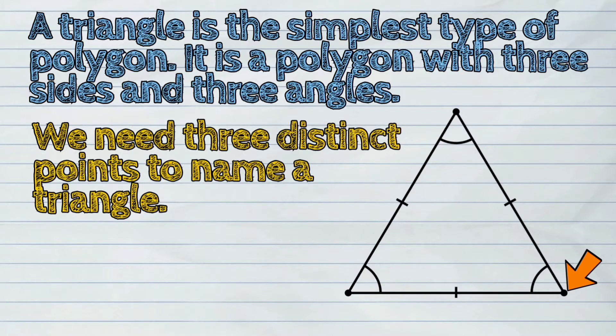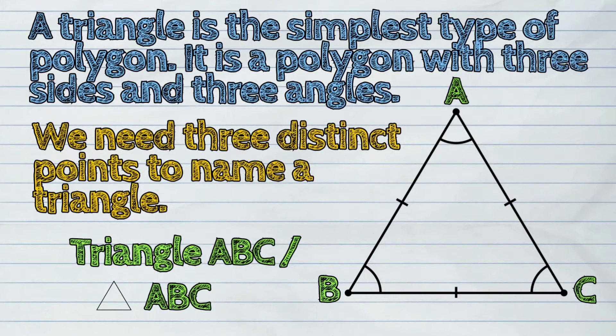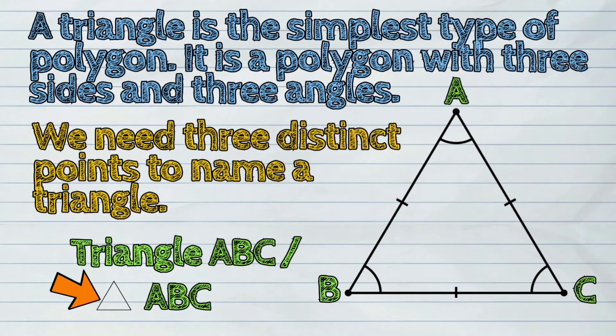For example, this triangle has three distinct points. It is named triangle ABC. We use this symbol to name a triangle.